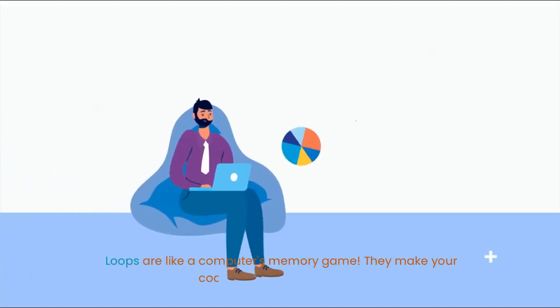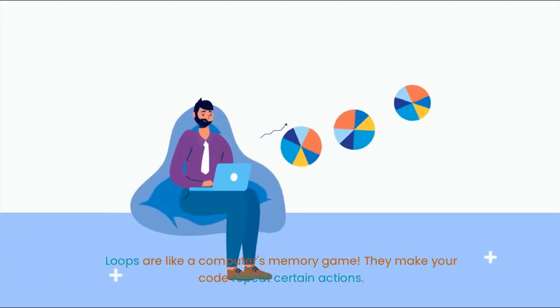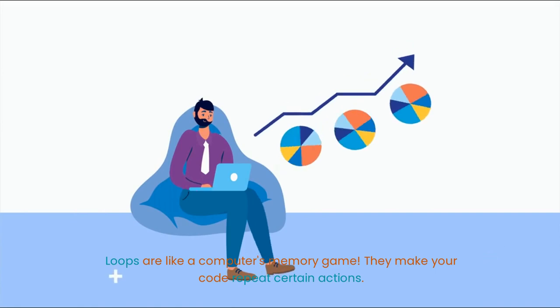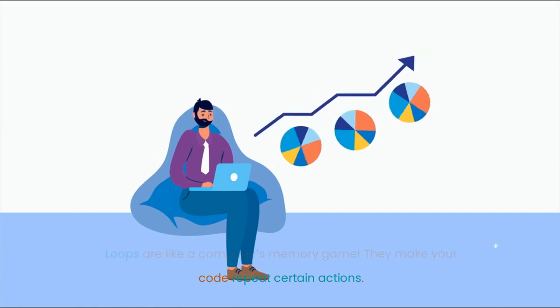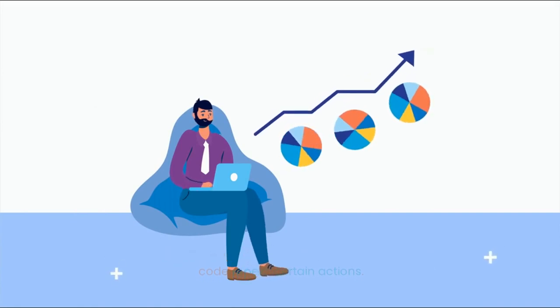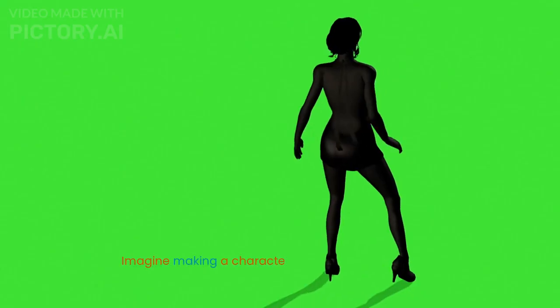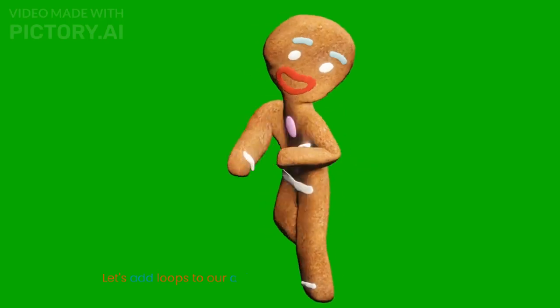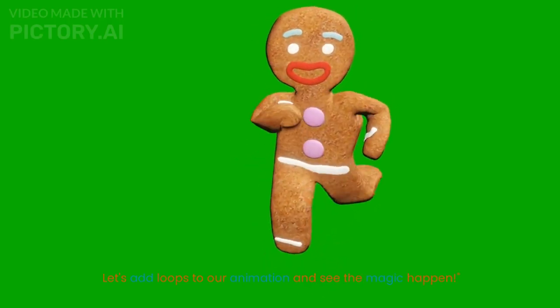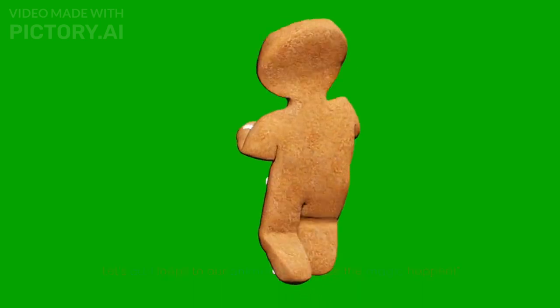Loops are like a computer's memory game. They make your code repeat certain actions. Imagine making a character dance or a rocket launch repeatedly. Let's add loops to our animation and see the magic happen.